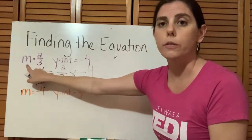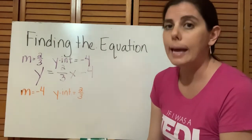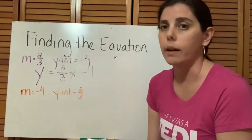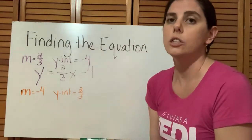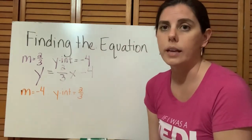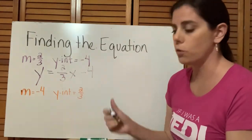So if we have a slope of two thirds, we have a y-intercept of negative 4, we can create the equation of that line very easily just by plugging those values in to our generic formula of y equals mx plus b. So y equals two thirds x minus 4.